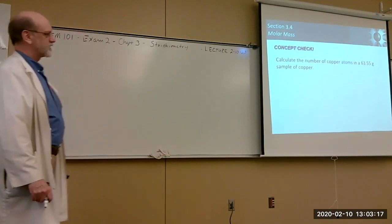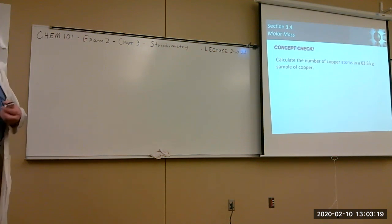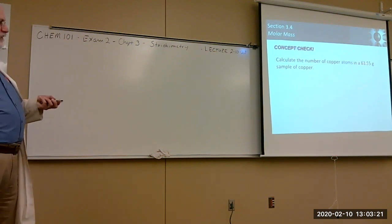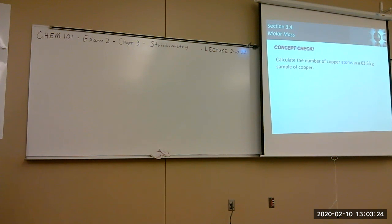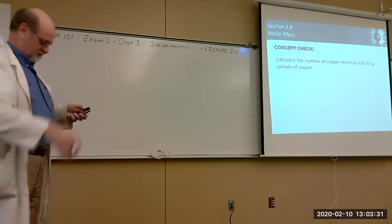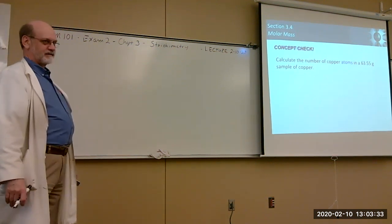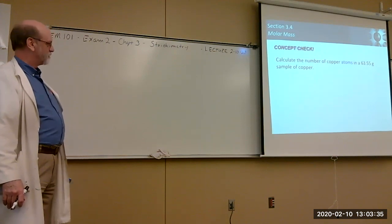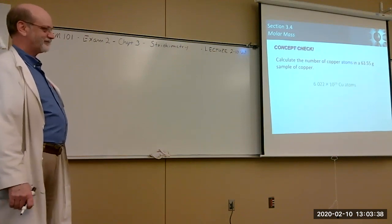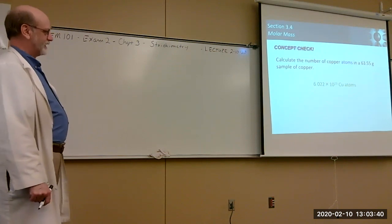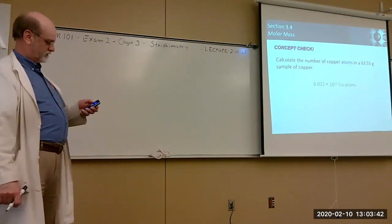Here's a trick question: how many copper atoms are in a sample of 63.55 grams? That's exactly one mole, so the answer is 6.022 × 10²³ atoms.